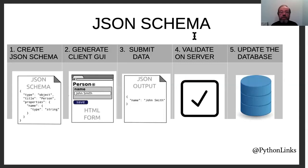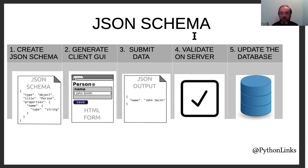The other piece that's newer is JSON schema. I'm sure you're all familiar with zop.schema. JSON schema does something very similar, but first of all it's in JSON, and secondly it's a tree. It's very good for modeling complexity. On the left-hand side we have the JSON schema, and we use that to automatically generate a GUI and validate the data on the client. You can submit that data to the server, validate on the server to make sure there's no funny stuff going on, and then update the database.